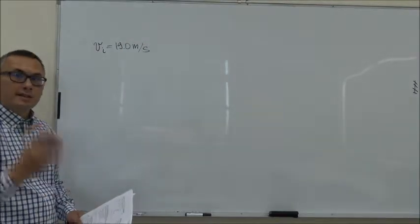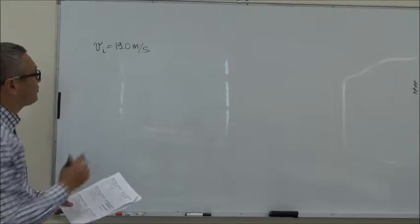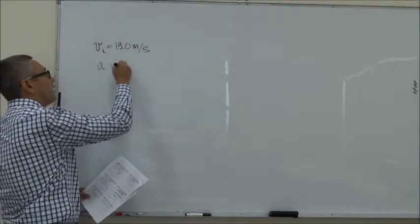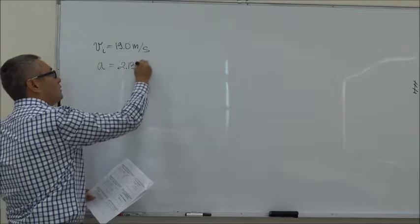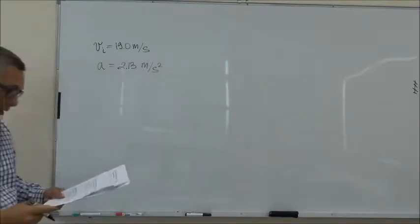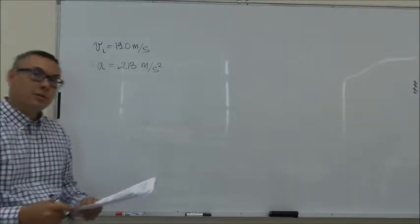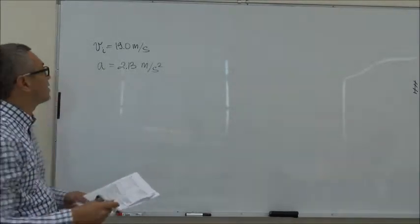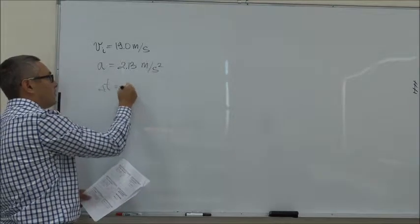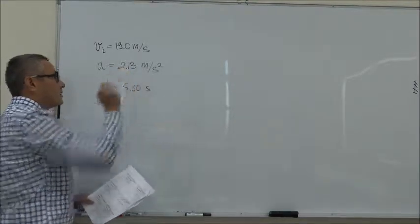It starts with this velocity and then accelerates with an acceleration of 2.13 meters per second squared. So let's say A is 2.13 meters per second squared and it does so for 5.60 seconds. So the time interval is 5.60 seconds.